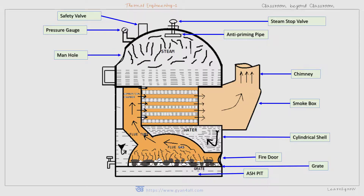The anti-priming pipe will be discussed shortly. The safety valve releases steam if the steam pressure goes above the working pressure. The pressure gauge monitors the pressure inside the boiler. The manhole allows a person to enter the boiler during shutdown for inspection or repair. The water gauge or water level indicator shows the level of water inside the boiler.